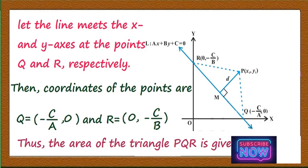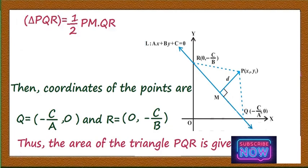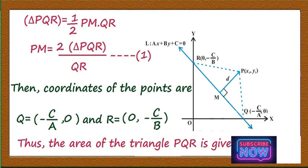The area of triangle PQR is given by ½ × base × height, where base is QR and height is PM. That is, area = ½ × PM × QR, which gives PM = 2 × area of triangle PQR / QR. Call this equation 1.